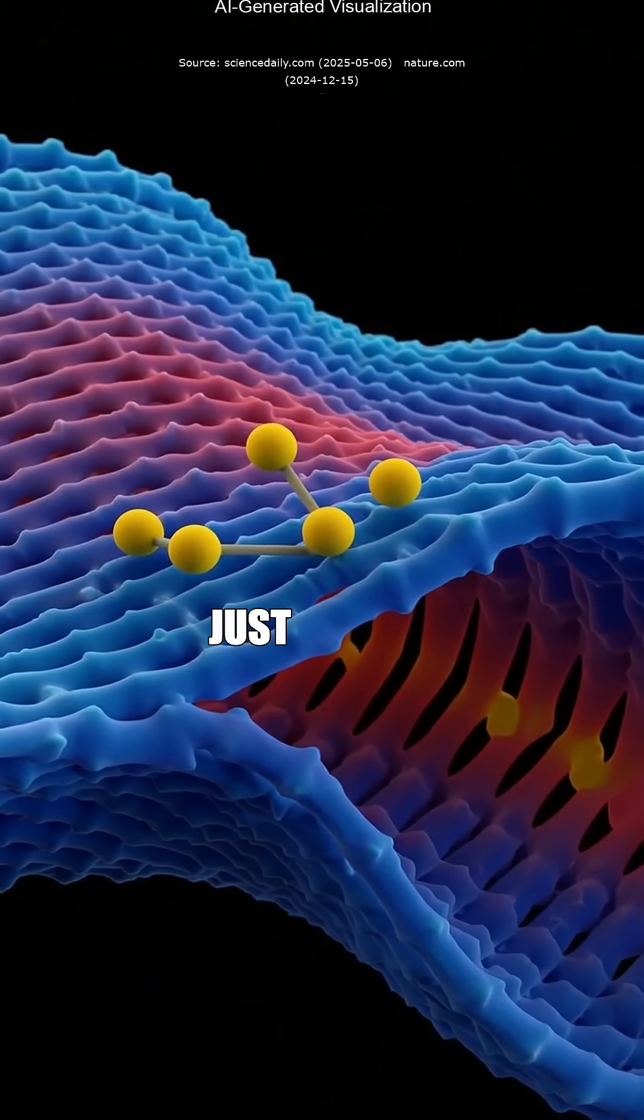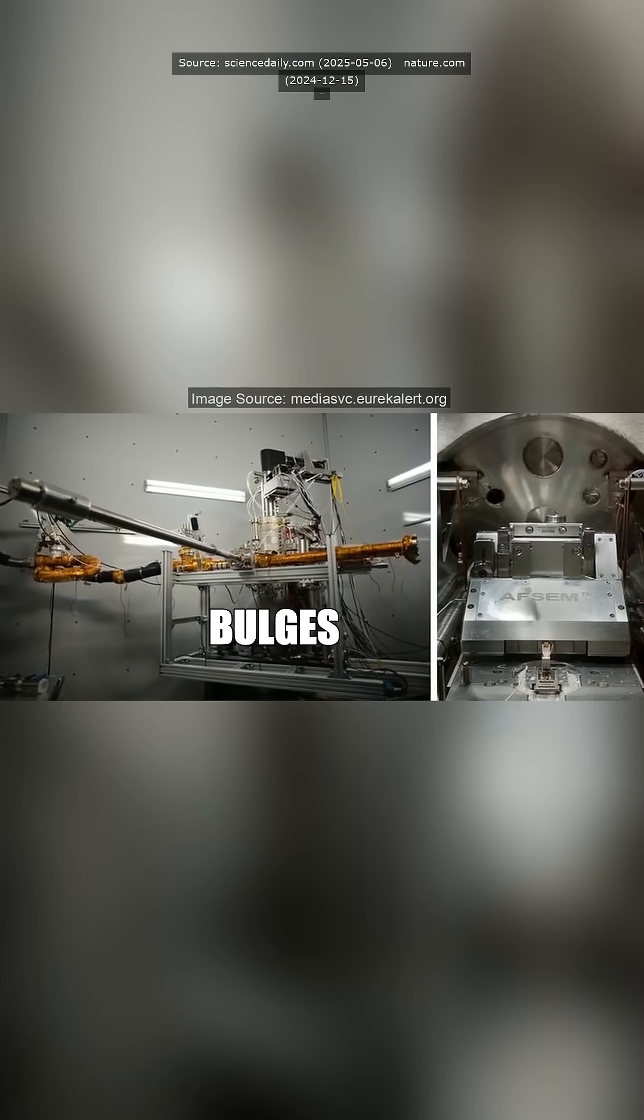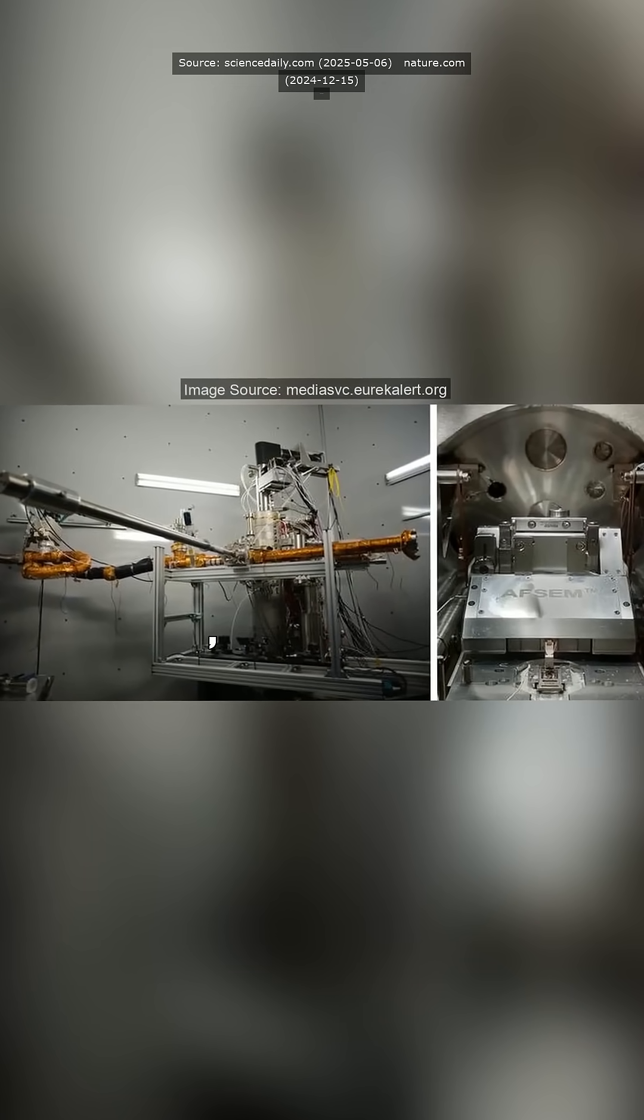Well, turns out by plucking out just two neighbouring atoms, graphene bulges up into little waves, kind of like an accordion.